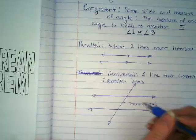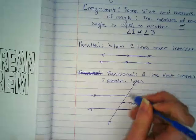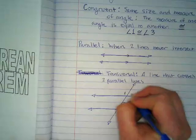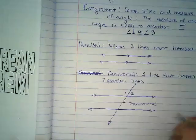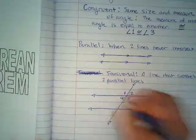So I have some angles here because an angle forms whenever two lines cross. I'm going to label this angle 1, angle 2, angle 3, and angle 4.